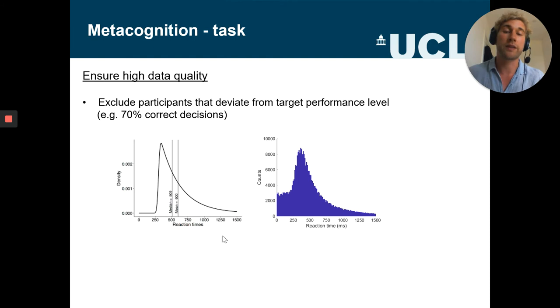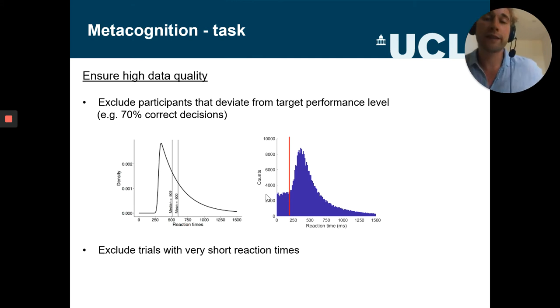For instance, we see way more trials where participants have very fast times below 150 milliseconds, and that might be an indication that on these decisions they just click through the task without paying attention. And then what we do is we just exclude these trials again.